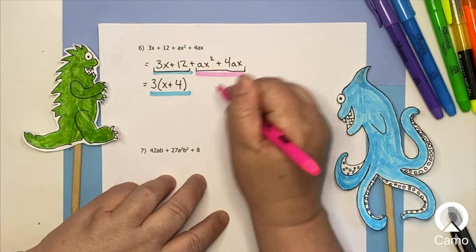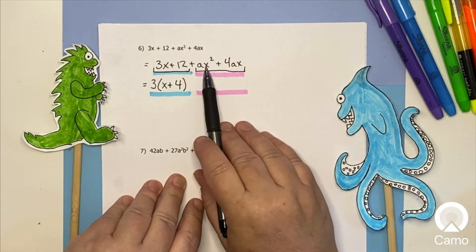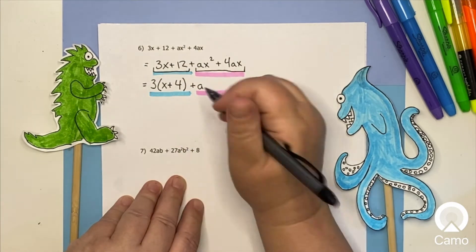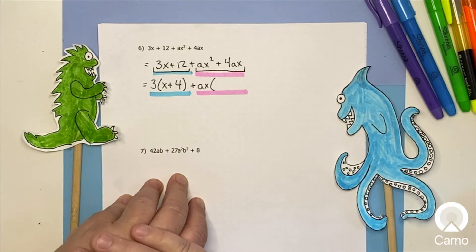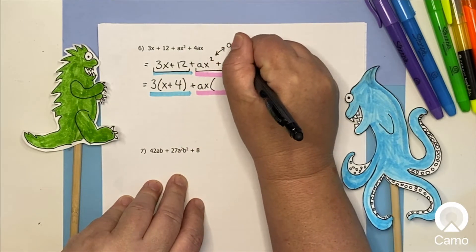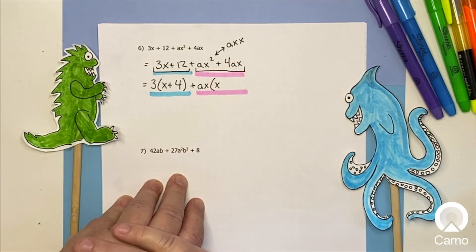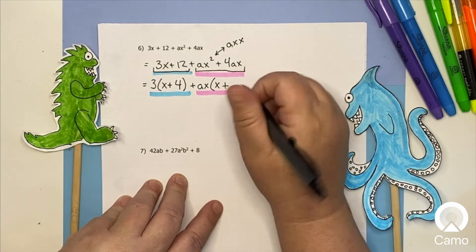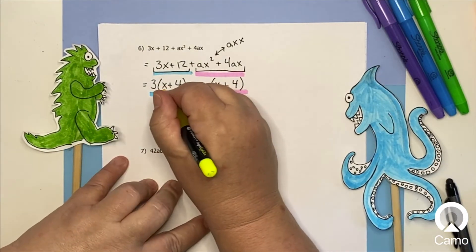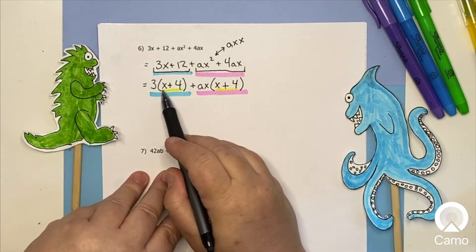Then I look at the second set of terms. I have aX², which is a·X·X, and then plus 4aX. So both a and X are common. If I factor out aX from the first term, I still have one X left over, giving me X. From the second term, factoring out aX leaves just 4. So I get aX times (X + 4). And look — both groups have the factor (X + 4). They match!